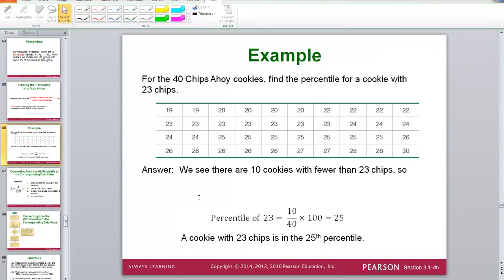Here is an example involving the Chips Ahoy cookies. We have a sample size of 40. We want to know what the percentile is for a cookie with 23 chips in it. So we count up all of the cookies in our sample that had less than 23 chips and there ends up being 10 of them. So we do 10 divided by 40 times 100 gives us 25. So a cookie with 23 chips is in the 25th percentile. It is just that simple.